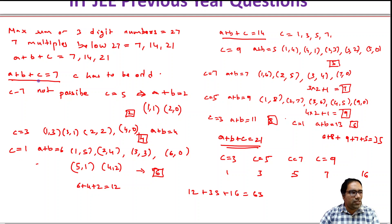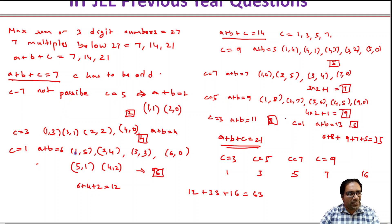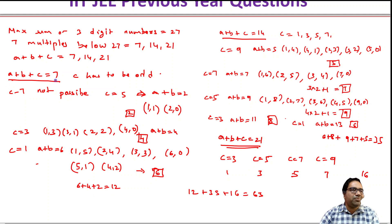When c equals 1, a plus b should equal 6. That means pairs: (1,5), (5,1), (2,4), (4,2), (3,3), (6,0) — so 6 possibilities. Total for a plus b plus c equals 7: 6 plus 4 plus 2, which equals 12.